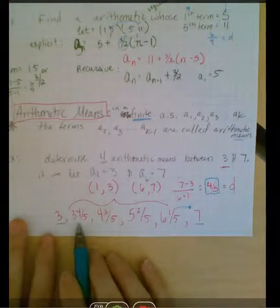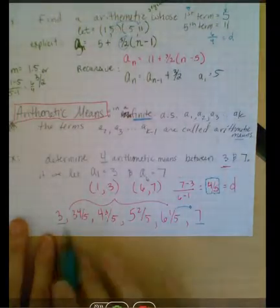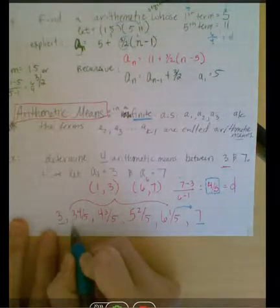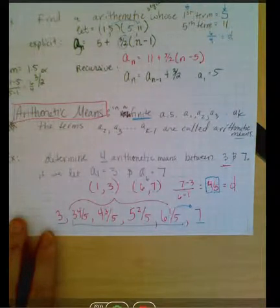So I have one, two, three, four arithmetic means between 3 and 7, and those were the terms that we were looking for. So that's how you do that, not too complicated.